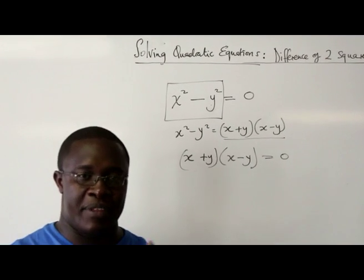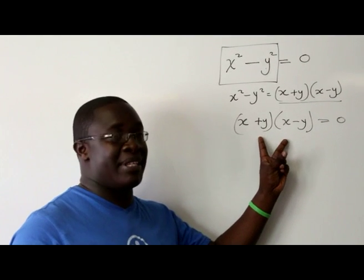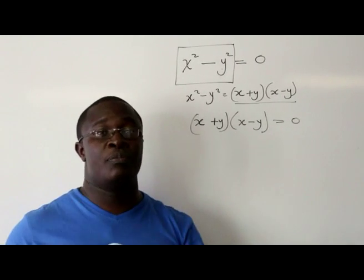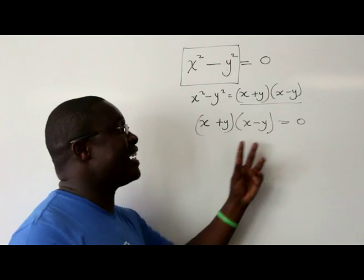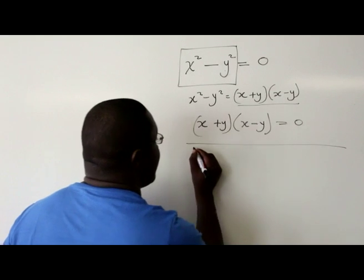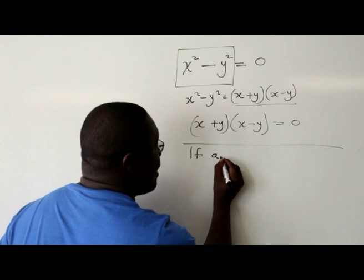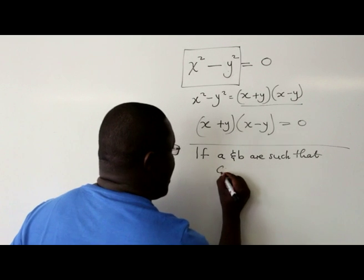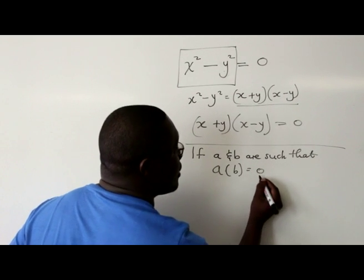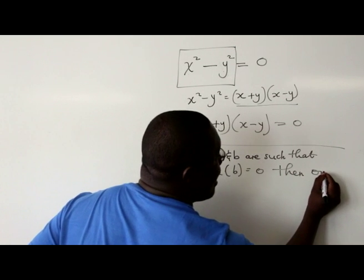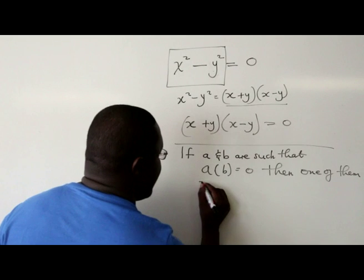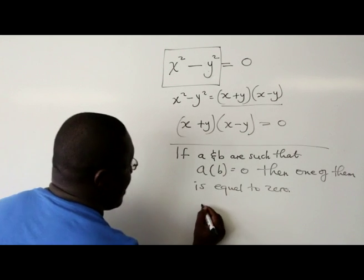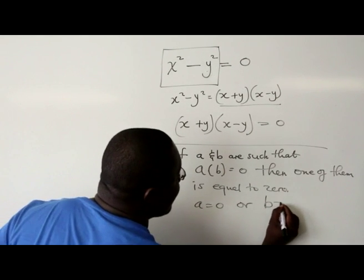Now, from the axioms of mathematics, you know that if any two numbers are multiplying each other and the product is zero, that means that one of the two should be zero because that's the only way you can get a product of zero. So if a and b are such that a × b = 0, then one of them is equal to zero. Meaning that a = 0 or b = 0.